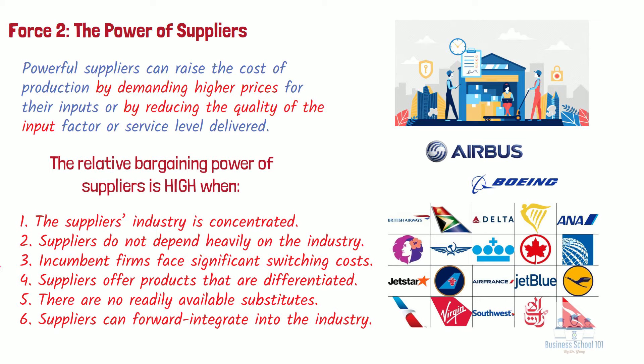Moreover, while some of the aircraft can be used as substitutes, Boeing and Airbus offer differentiated products. Thus, the supplier power of commercial aircraft manufacturers is quite significant. This puts Boeing and Airbus in a strong position to extract profits from the airline industry, thus reducing the profit potential of the airlines themselves.